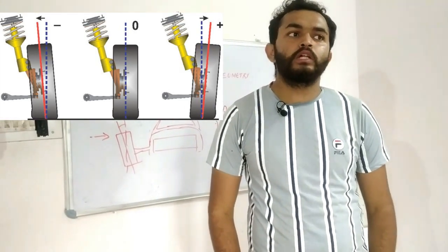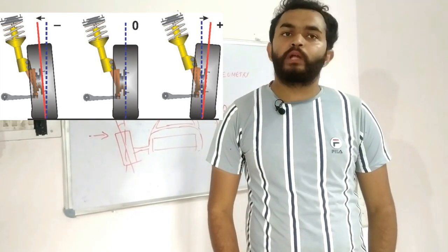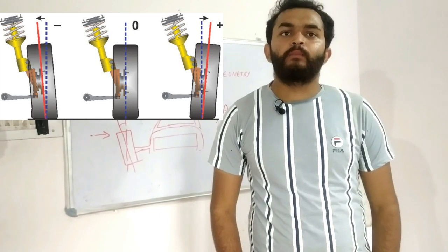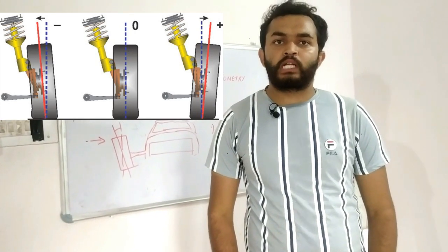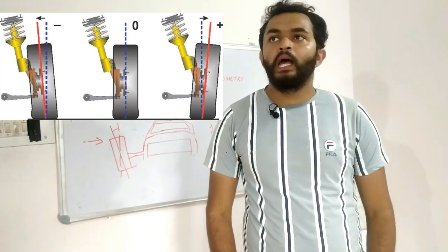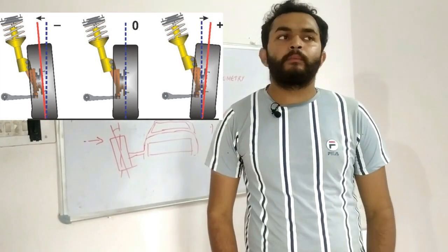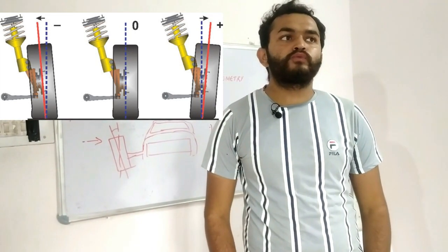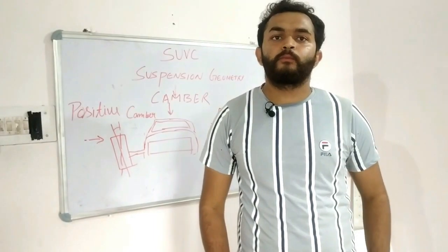Most of the Formula SAE teams — including FSAE teams and Baja teams — use negative Camber Angle. Zero Camber Angle is used for high-speed vehicles.